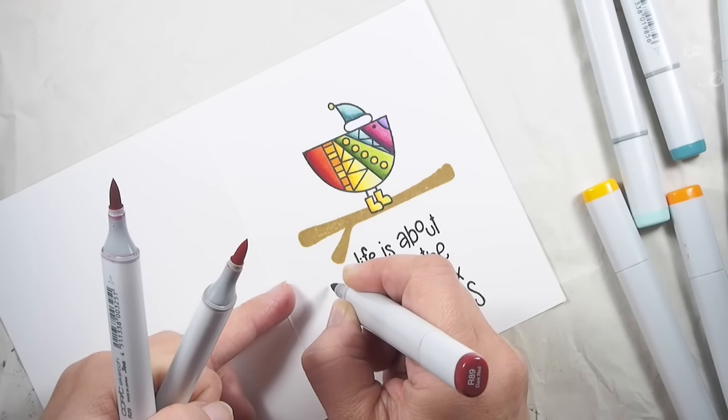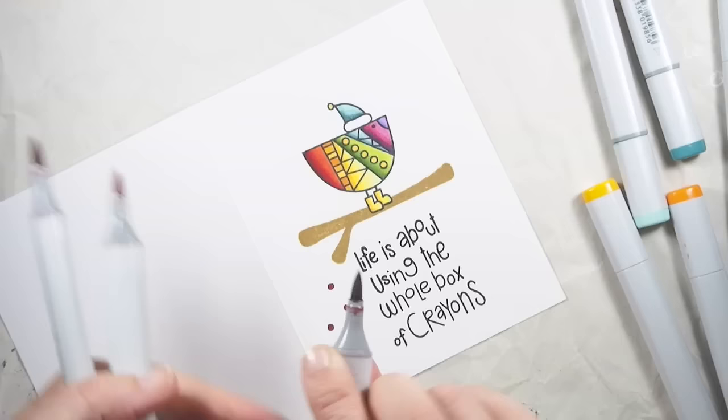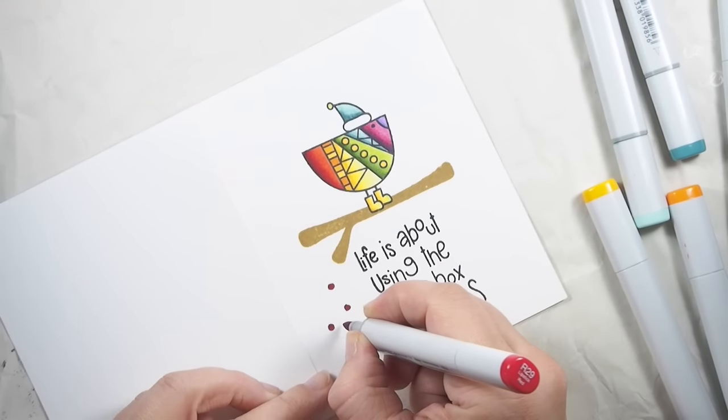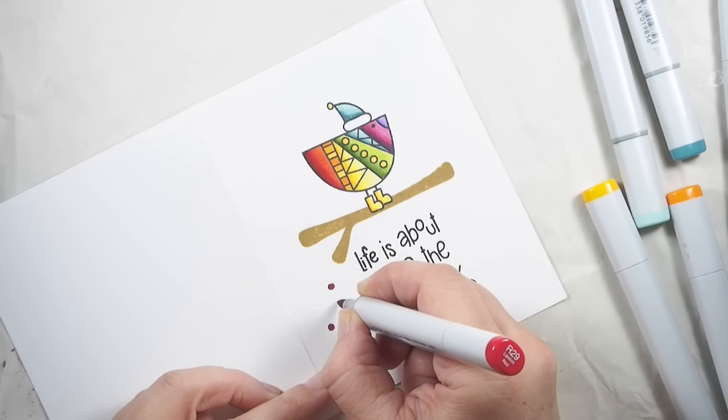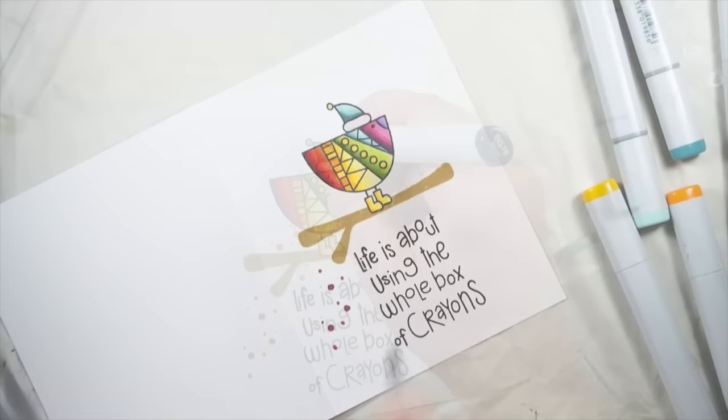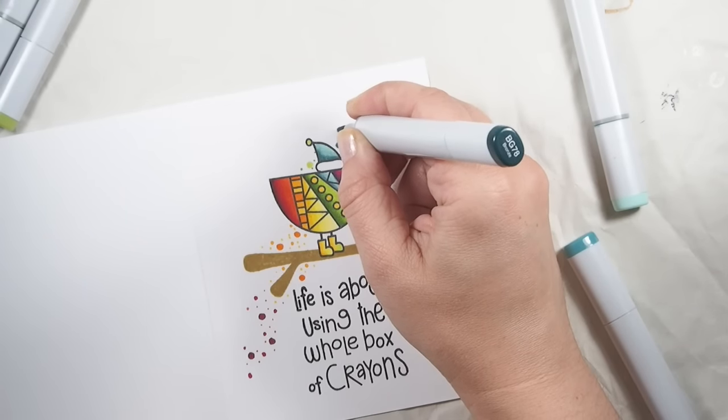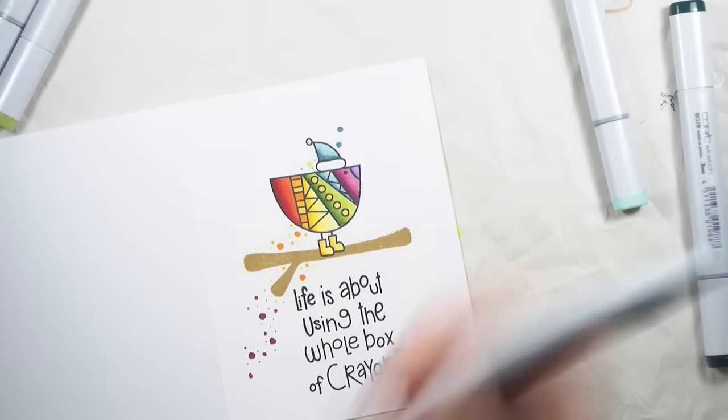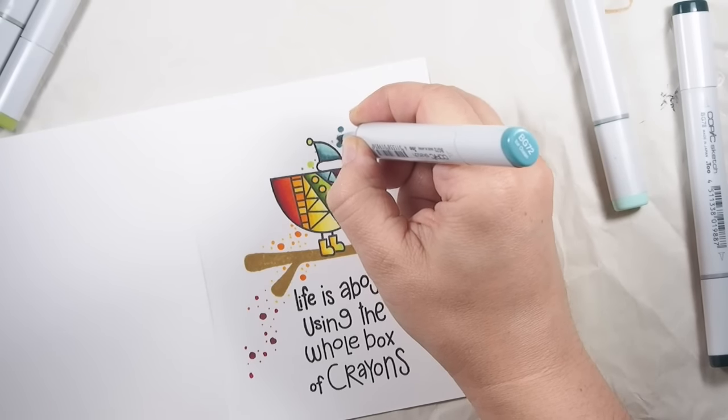So I grabbed the same Copic markers that I had used to color in the bird to lay down some of my signature dots in the same colors as I did on the bird. I also used the same progression of color from red towards yellow, green and then purple.